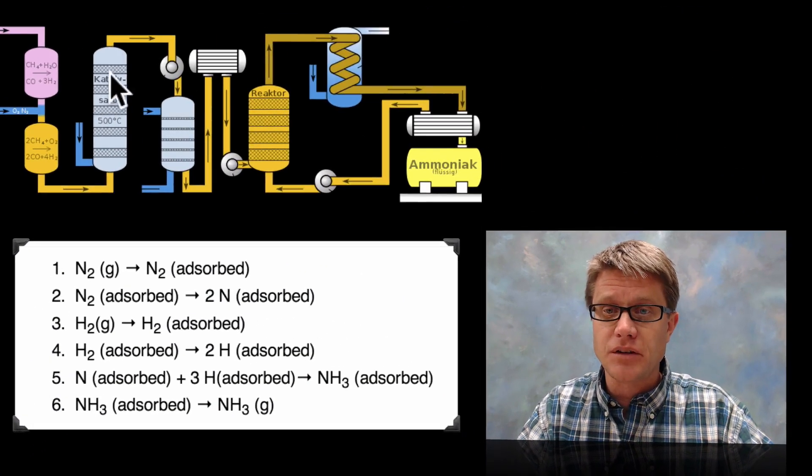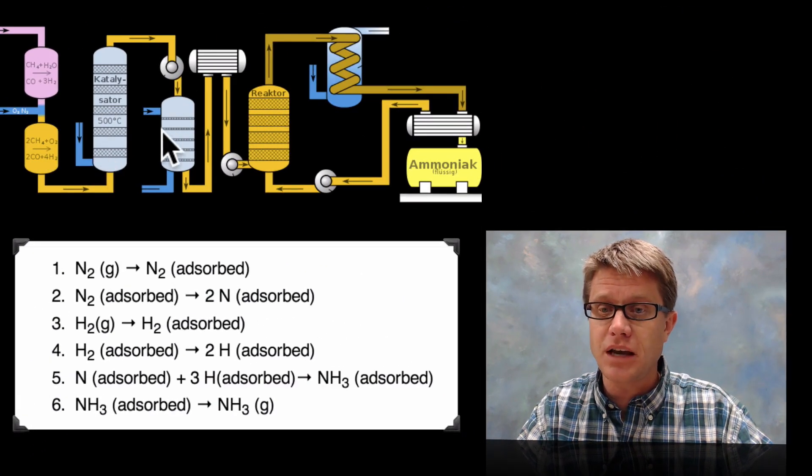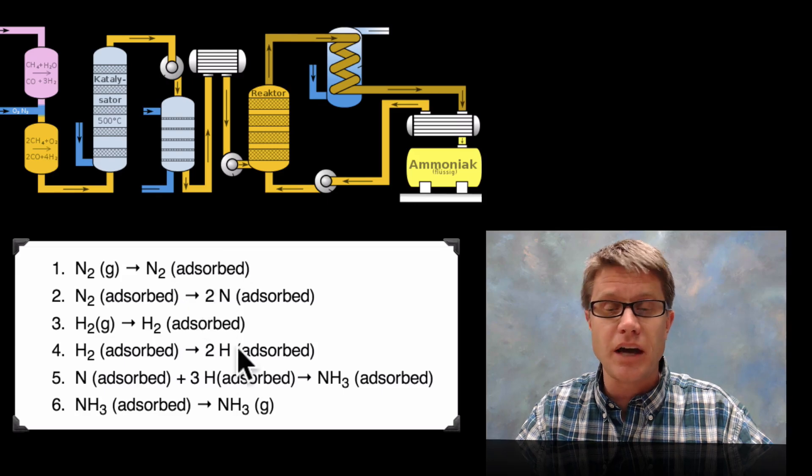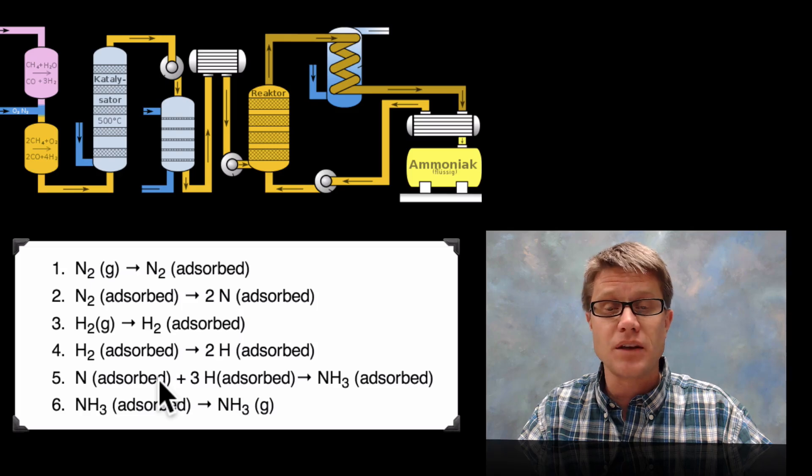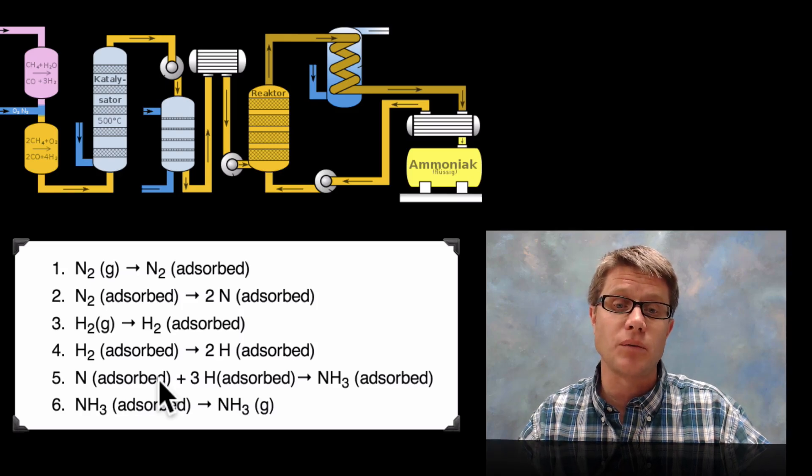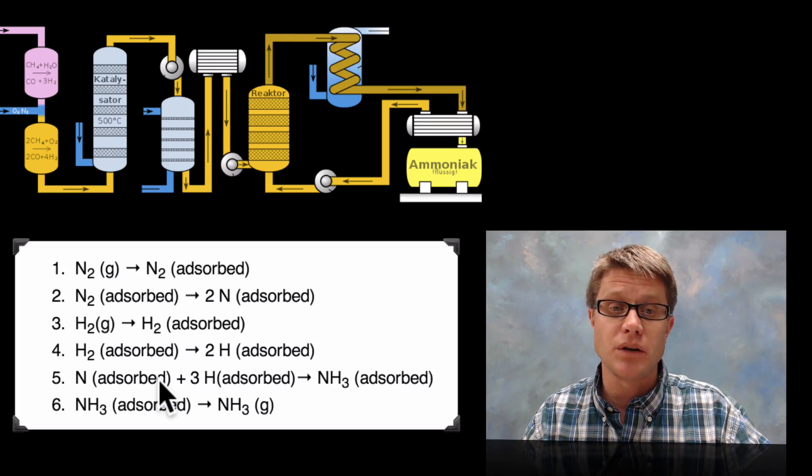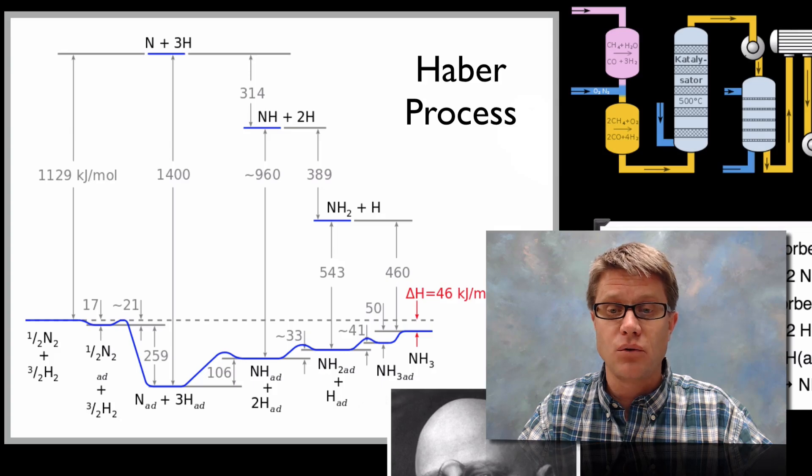And if you look at it, we've got a number of different catalysts and a number of different containers. And you can see if we look at all the elementary steps of this reaction, there's a lot of adsorbing of the gases, adsorbing of the nitrogen. And so eventually over time what we're doing is we're creating ammonia. And here's the energy profile of that whole reaction.